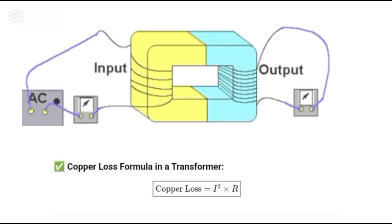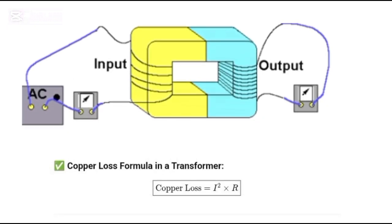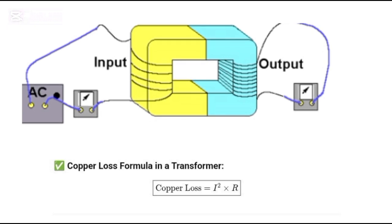Copper losses in the windings are due to the resistance in the wire. This resistance turns electricity into heat, much like when your phone charger gets warm after a while.